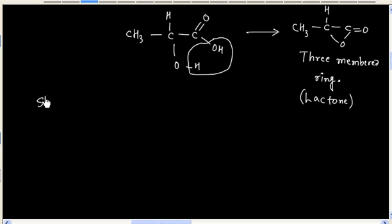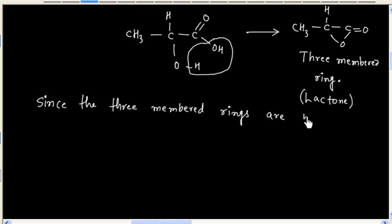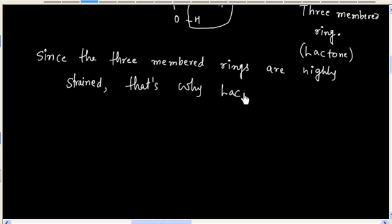Since the ring containing three carbon or two carbon or two carbon and oxygen, since the three-membered rings are highly strained, that is why lactone is not formed in this case.